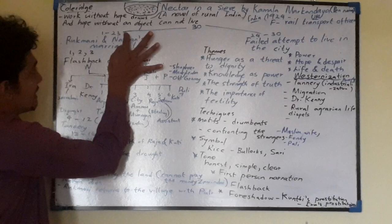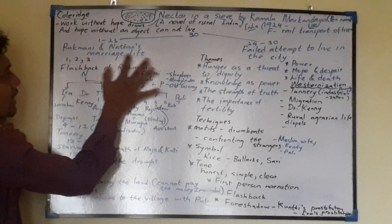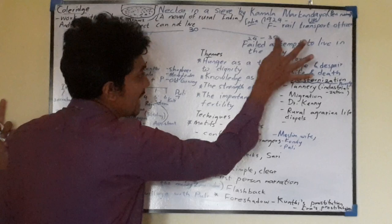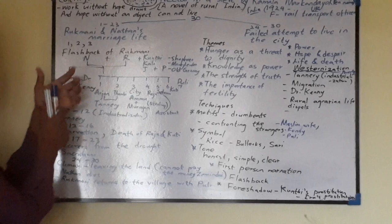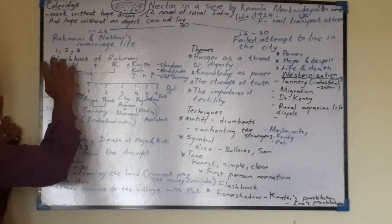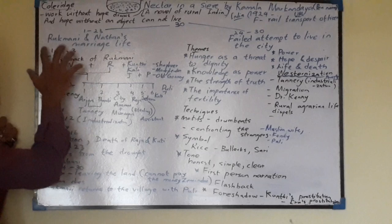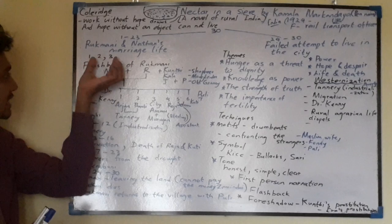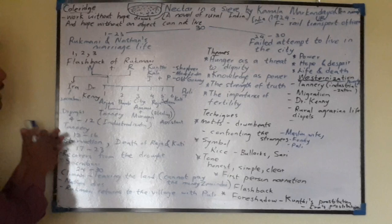When it comes to this novel, the novel carries 30 chapters. Chapters 1 to 23 are basically about Rukmani and Nathan's marriage life, and chapters 24 to 30 are basically about their failed attempt to live in city life. Rukmani is the narrator and protagonist in the story. From her perspective, through first person narration and flashbacks, the novel flows. Chapters 1, 2, and 3 are basically about the flashbacks of Rukmani's marriage life.